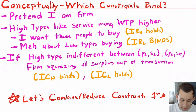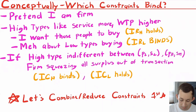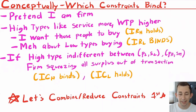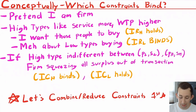For the low types, the firm is sort of indifferent about them buying — they like storage but aren't willing to pay nearly as much as the high types. So whether or not they buy, the firm is somewhat indifferent, which means the IR constraint for the low type should bind — equal to zero. The other thing to think about is that if the firm designs two packages and high types are just indifferent between the two, the firm could do things differently to squeeze more surplus out of everyone.